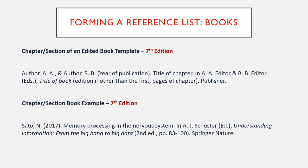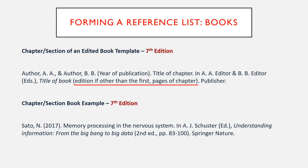Citing a reference for a chapter or section of an edited book: include the author's last name and initials, year of publication, title of the chapter, name of the editor, title of the book italicized, edition if other than the first, pages of the chapter, and publisher.